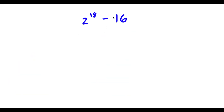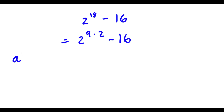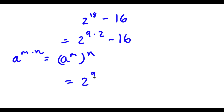Alright, so we have 2 to the power of 18 minus 16. Now, 18 here is the same thing as 9 times 2. So now I have 2 to the power of 9 times 2 minus 16. And if I have something in the form a to the power of m times n, this is the same thing as a to the power of m to the power of n. So 2 to the power of 9 times 2 is going to equal 2 to the power of 9 to the power of 2.